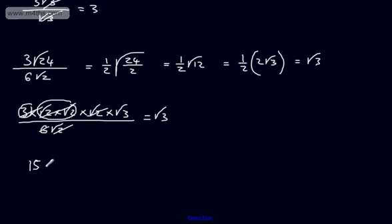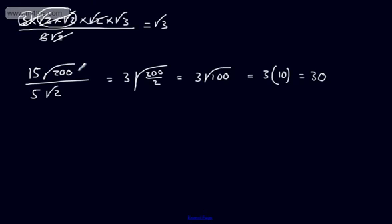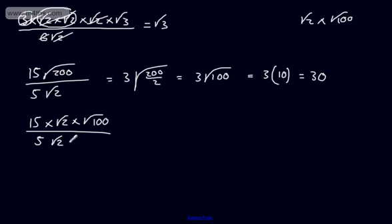Let's look at another one: 15 root 200 divided by 5 root 2. What could we do? Well, 15 over 5 gives 3, and then the root of 200 over 2 gives 3 times root 100. Root 100 isn't a surd — it's just 10 — so 3 times 10 gives 30. Alternatively, we could write root 200 as root 2 multiplied by root 100, giving 15 times root 2 times root 100 over 5 times root 2. The root 2s cancel, 15 over 5 gives 3, and we get 3 times root 100 which is 30. These are different ways of simplifying — it's certainly not the only way, but it gives you a nice option.